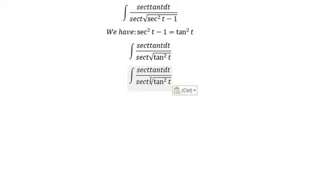The square root of tan squared t gives us tan(t). Sec(t) tan(t) divided by sec(t) tan(t) gives us dt, which equals t plus c.